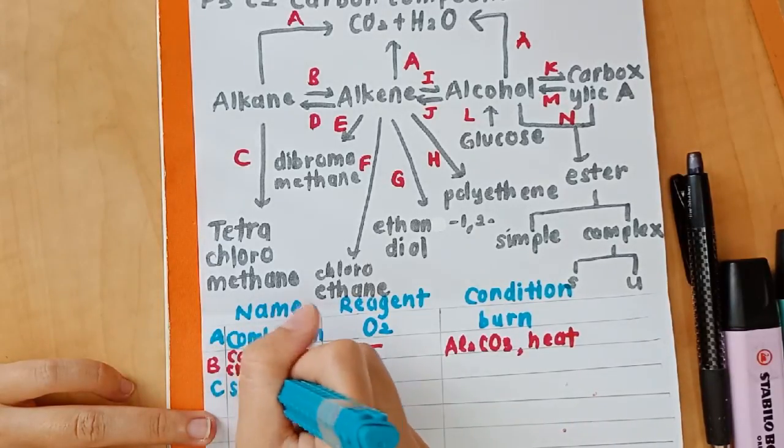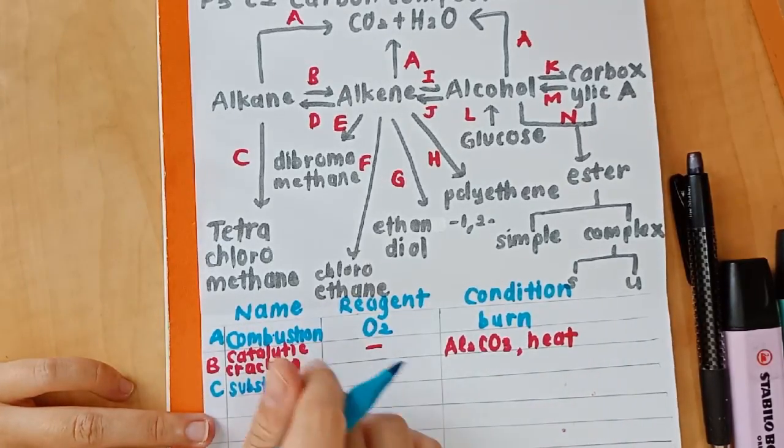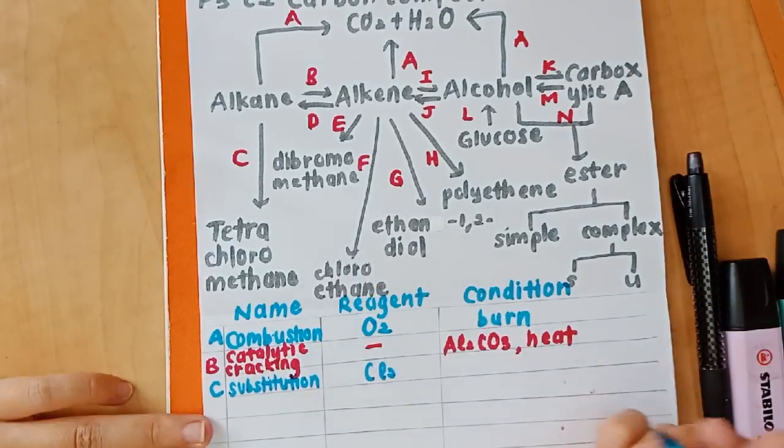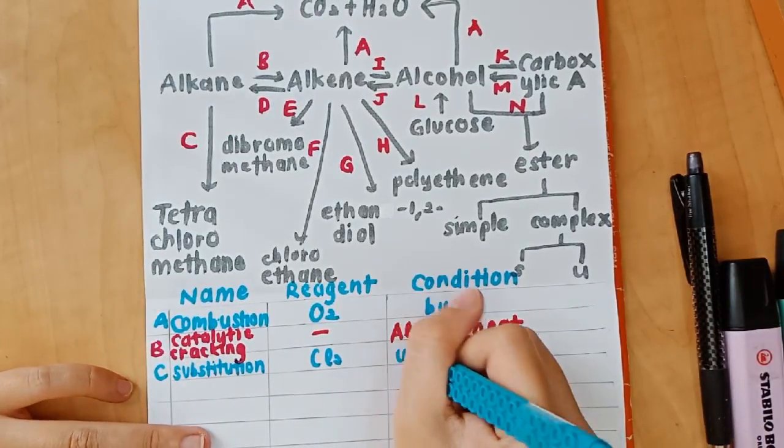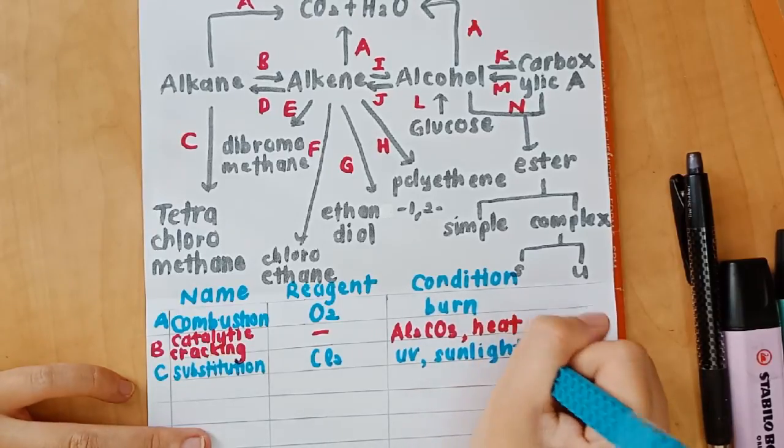C is for alkane to tetrachloromethane. The reaction name is substitution. Reagent needed is Cl2. Condition is UV and sunlight.